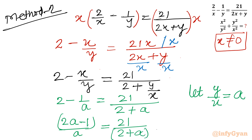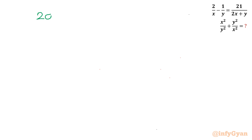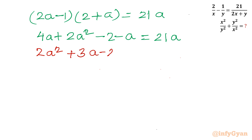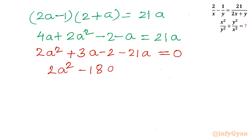Cross multiplying: (2a minus 1)(2 plus a) equals 21a. Expanding: 4a plus 2a² minus 2 minus a equals 21a. Taking all terms to the left: 2a² plus 3a minus 2 minus 21a equals 0, giving 2a² minus 18a minus 2 equals 0. Dividing by 2: a² minus 9a minus 1 equals 0.